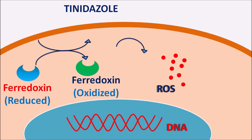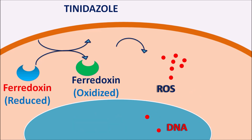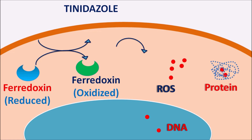The reduced forms of tinidazole are converted into reactive oxygen species (ROS). These ROS interact with important cellular components: they interact with DNA to inhibit genetic transcription, and they interact with and degrade proteins. In this way tinidazole acts on DNA and proteins within the parasite, reducing microbial replication. Because of its broad activity, tinidazole acts on Trichomonas, Giardia, and Entamoeba species.